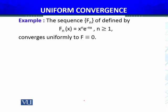Let's consider an example. The sequence {F_n} defined by F_n(x) = x^n e^{-nx}, n ≥ 1. We considered this sequence, calculated its first derivative, found the maximum value e^{-n} at x = 1, and showed that this sequence of functions converges pointwise to F(x) = 0. Now I am going to show that this convergence is, in fact, uniform convergence.